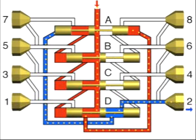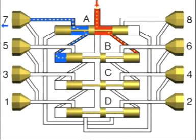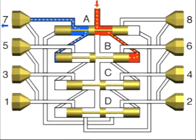Once piston A has reached its left-hand final position, the junction channel to the right-hand end of piston B is opened. The lubricant which arrives from above also moves piston B to the left, causing the lubricant quantity ahead of the left-hand end of piston B to be dispensed to outlet 7.